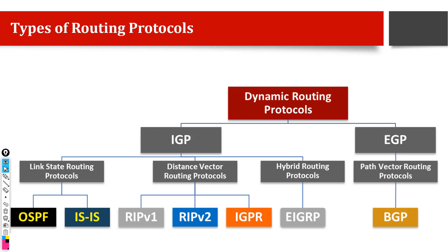So mainly two types of routing protocols exist: Link State and Distance Vector. The differences between them are many. Link State protocols use a different type of algorithm called the Dijkstra algorithm. Distance Vector routing protocols use an algorithm called DUAL. DUAL was prepared by Dijkstra and it calculates paths based on cost.